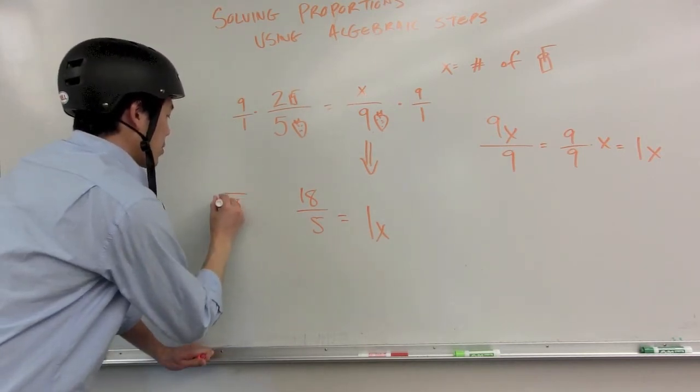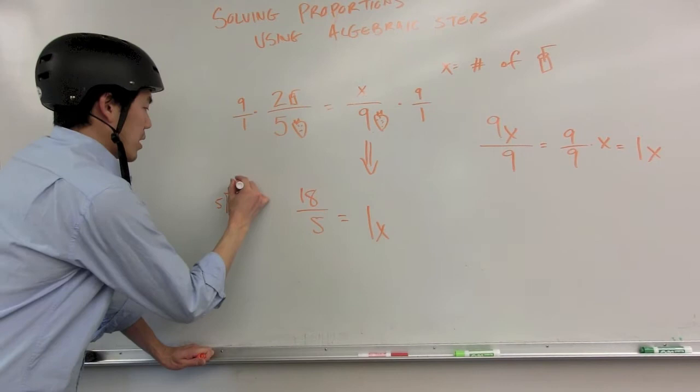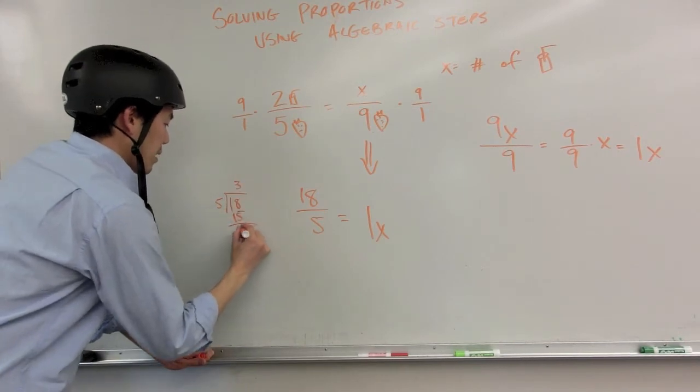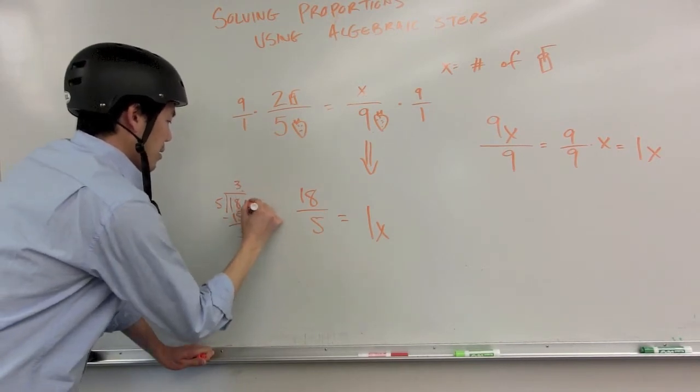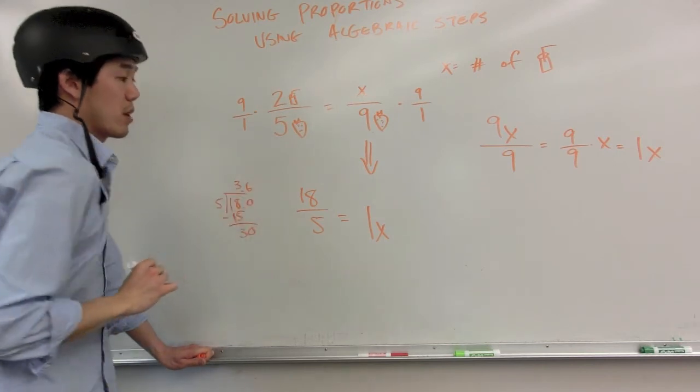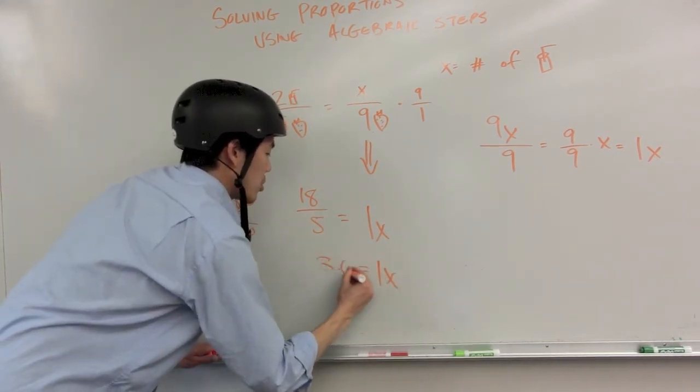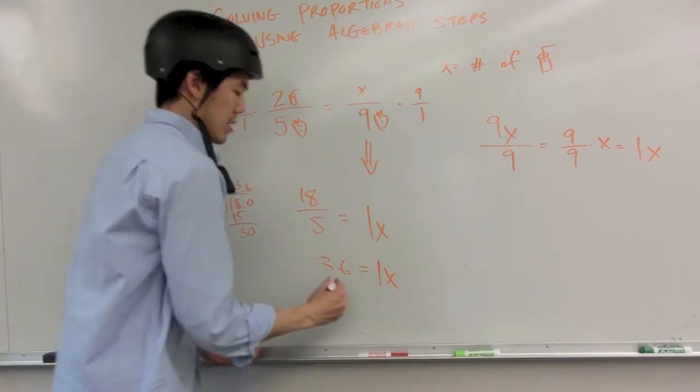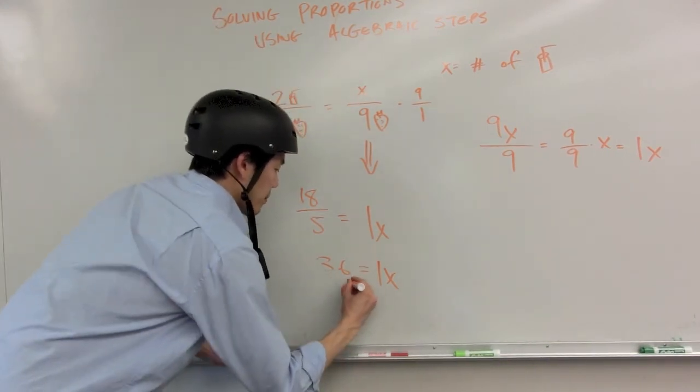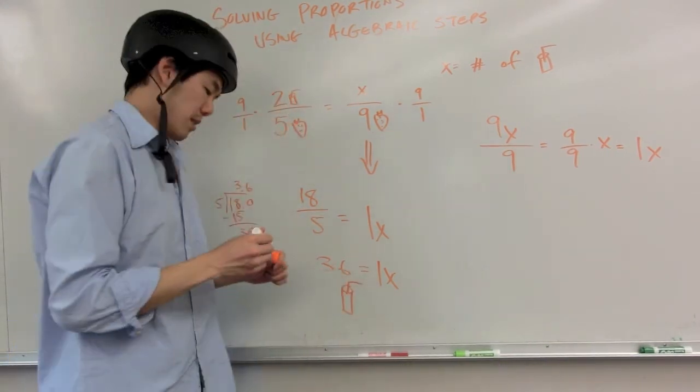Now eighteen divided by five, I'm going to do the division real quick. That's three point six. So one X is also equal to three point six. You can make about three point six smoothies using nine strawberries.